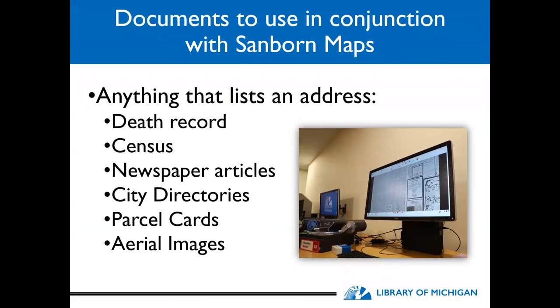When researching with Sanborn maps, there are other types of documents you should use in conjunction with them — predominantly anything that lists an address. This can include death records, census records, newspaper articles, city directories, parcel cards, and aerial images.